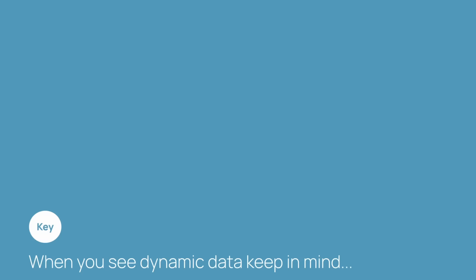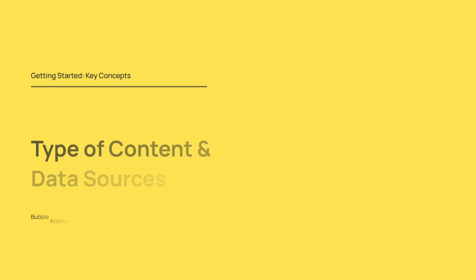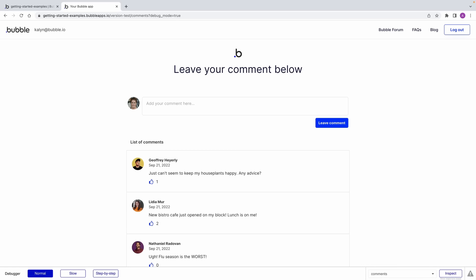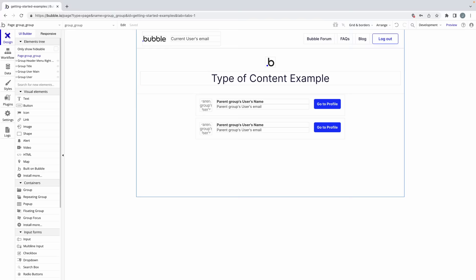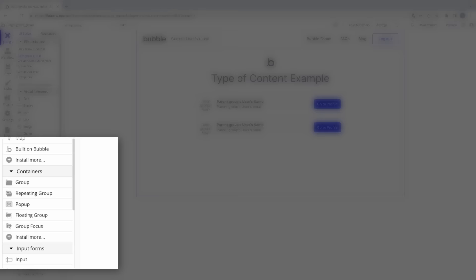Now every time you see dynamic data in an element or workflow, you should keep in mind which is the data source, which are the operators, and how the whole expression is evaluating. Next, we're going to learn more about type of content and data sources. We've talked about the building blocks of responsive design, user registration, data types, dynamic data, and things. Now we're going to dive into the next level of building your UI by exploring type of content and data sources.